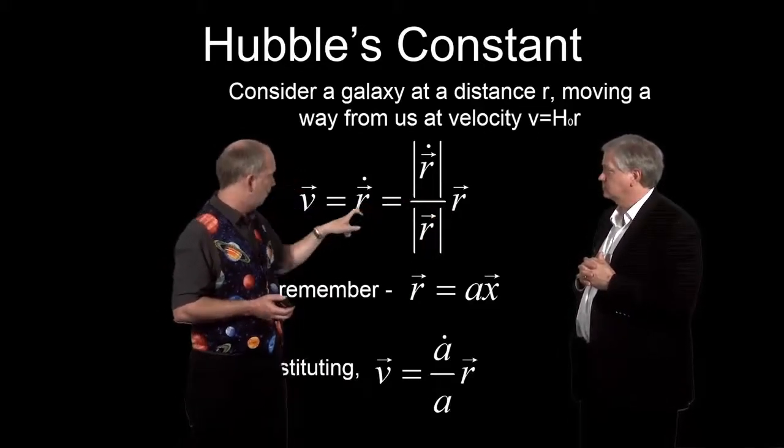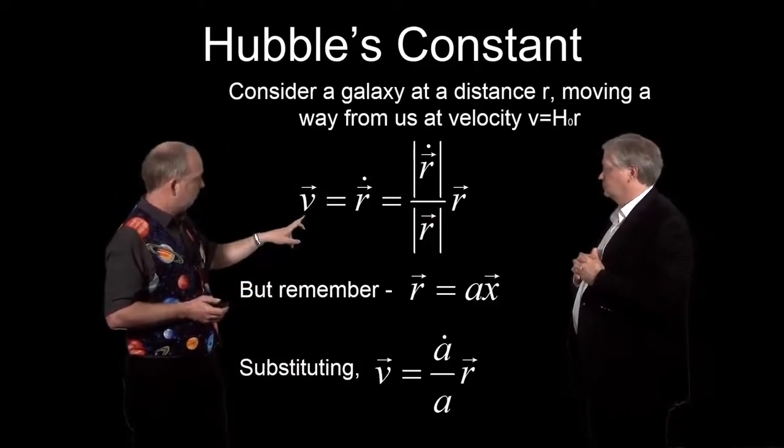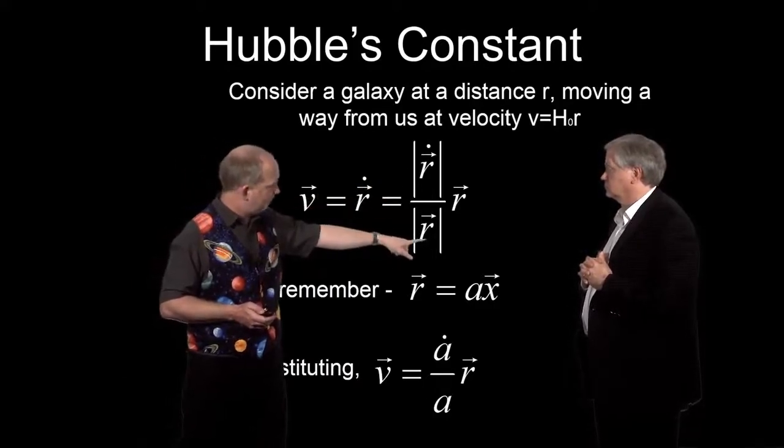And so that would cancel with that, and this will just give us this. So that's telling us that the vector velocity is given by the ratio of these two scalar numbers times the vector distance.